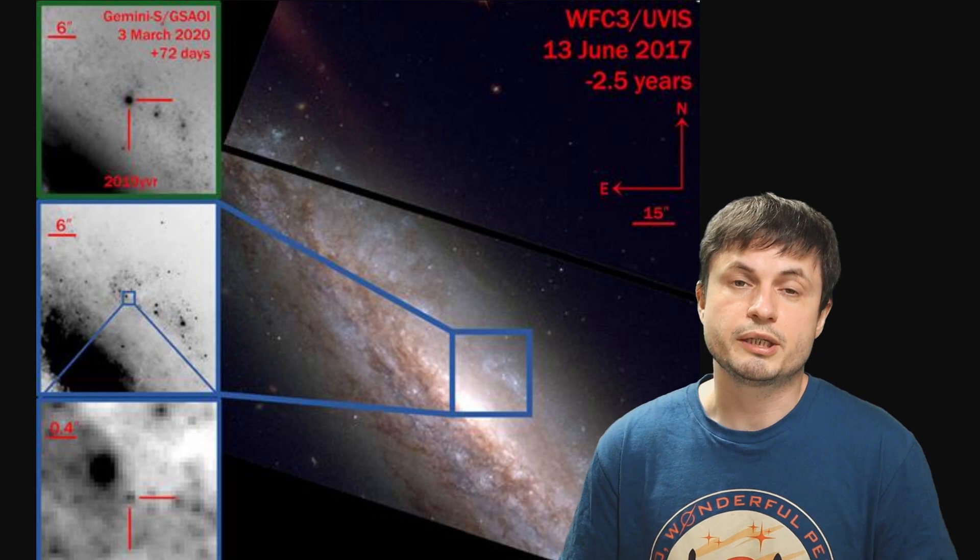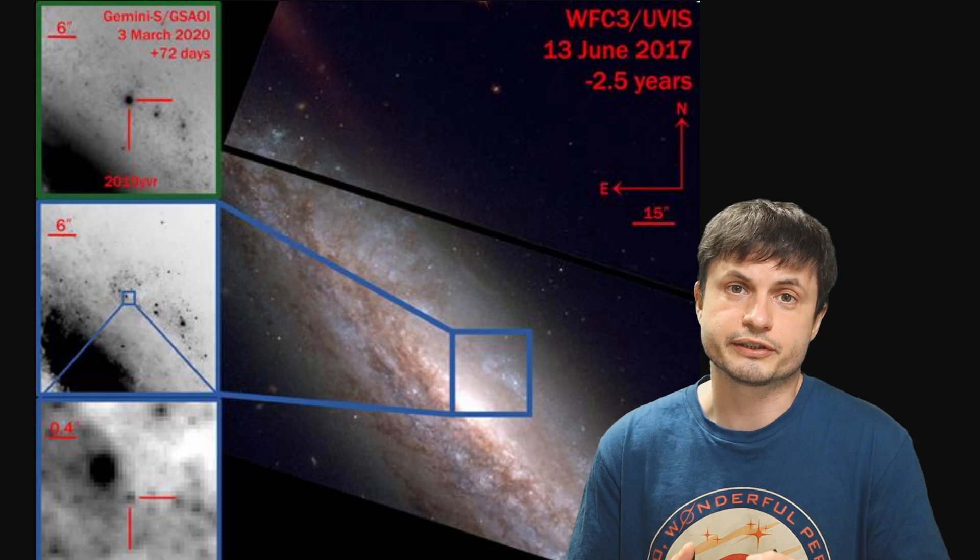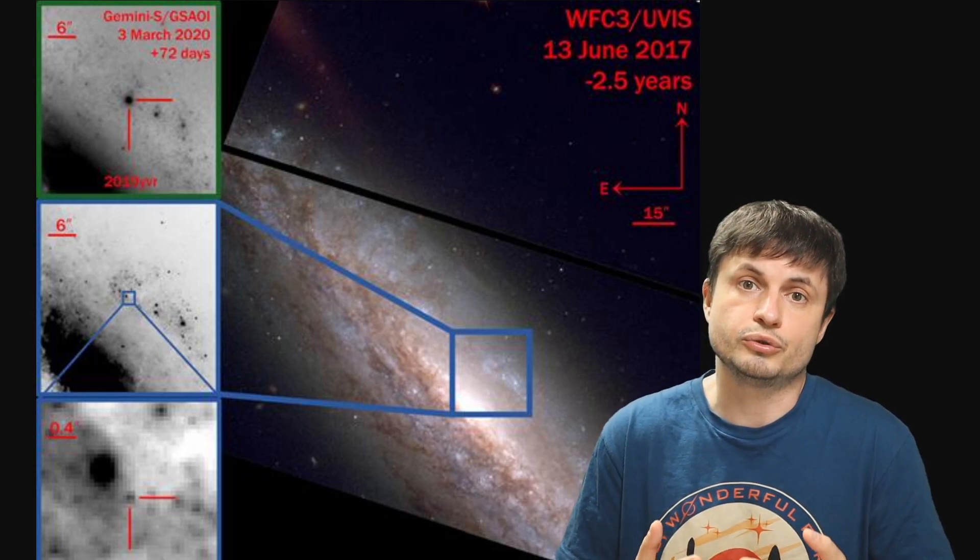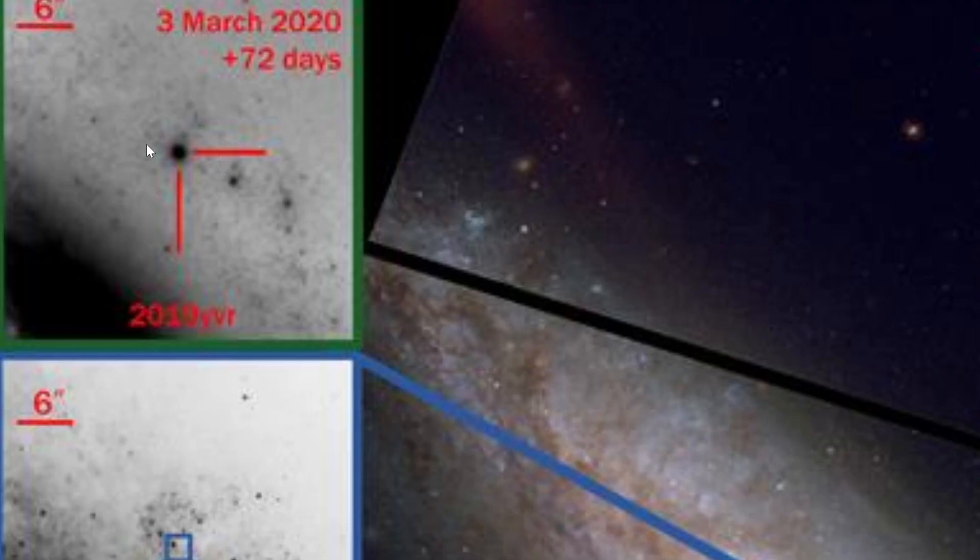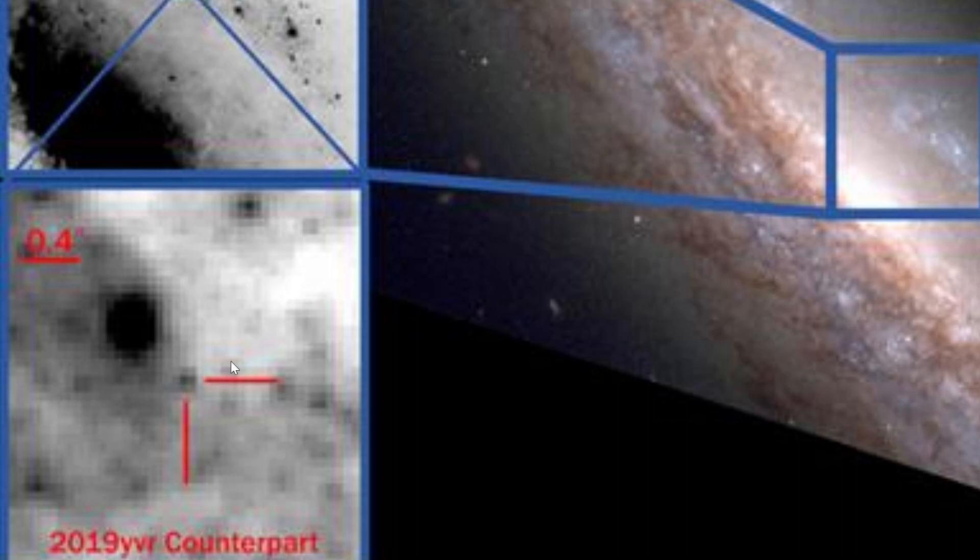And all of this was only possible because two and a half years prior to the supernova, the Hubble was actually observing this galaxy in a lot of detail, allowing the scientists to zoom in and to actually find where the supernova happened. With the supernova visible right here, and the original star sort of visible in this image right here. All of this as always you can find in the description below.